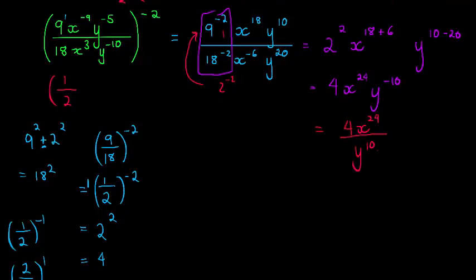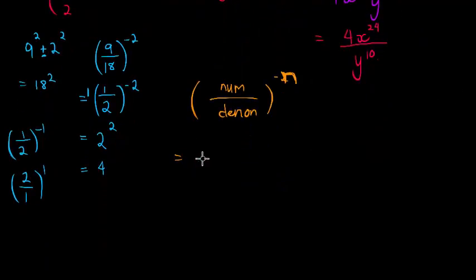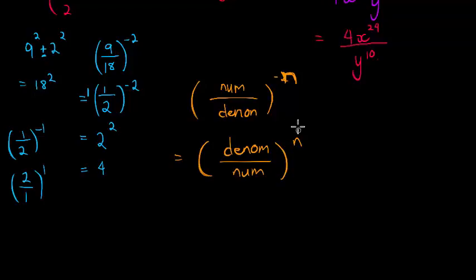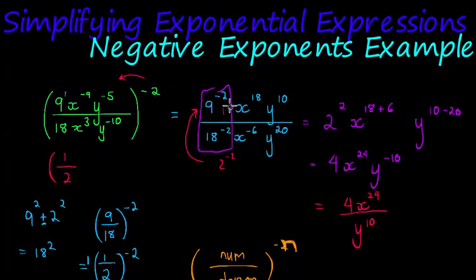Another approach you can always use: whenever you have a fraction raised to a negative exponent — numerator over denominator to the power of negative n — you can just swap the fraction to denominator over numerator to the power of positive n. The only limitation is the entire expression must be a fraction; you can't do this with something like 1 plus one half to the power of negative 2. When valid, swapping the fraction means you distribute a positive 2 instead of a negative 2, and you must get the same answer.